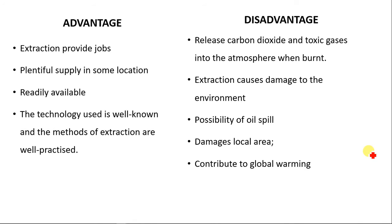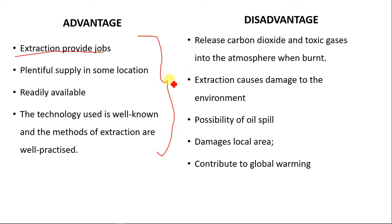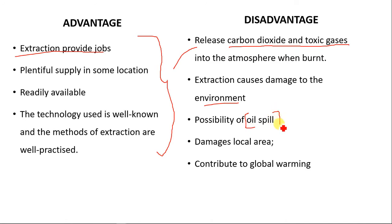What are the advantages and disadvantages of fossil fuels? Advantages: extraction of fossil fuels provides jobs; they are plentiful in some locations and readily available; the technology used is well known and methods of extraction are well practiced. However, there are many disadvantages: they release carbon dioxide and toxic gases into the atmosphere when burned; extraction could damage the environment; there is a high possibility of oil spill during extraction, which can damage local areas; and the release of carbon dioxide and toxic gases contributes to climate change and global warming.